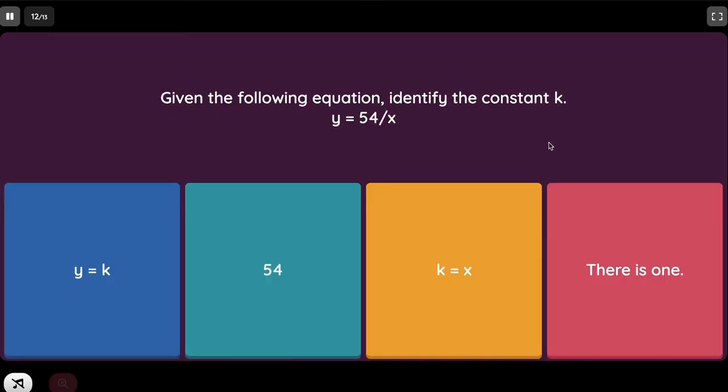Given the following equation, identify the constant k. y equals 54 over x. y equals k over x, this is the inverse equation. So we replaced k with 54. The answer is going to be 54.